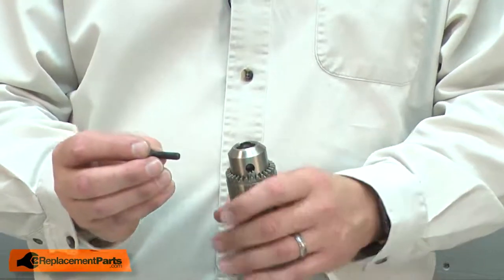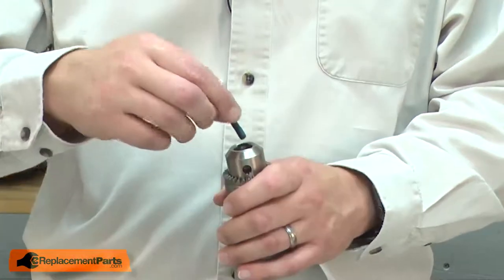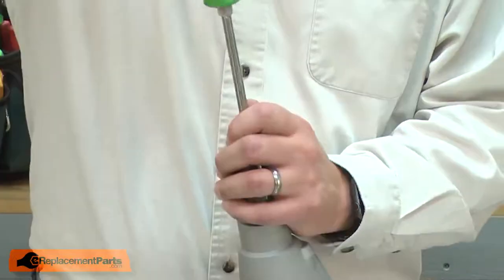Now I can install the new screw. The screw comes with thread lock pre-applied. I'll insert the screw into the chuck and tighten it up.